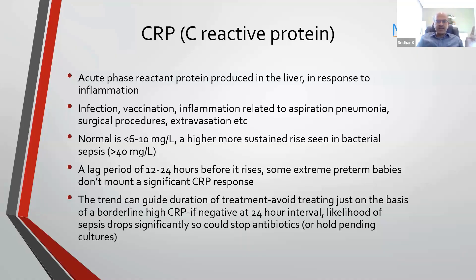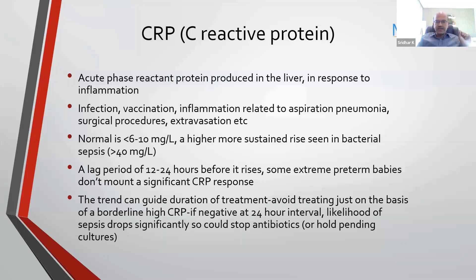A higher, more sustained rise is seen in bacterial sepsis, usually more than 40, and can go into the hundreds. A lag period of 12 to 24 hours is noted before it rises, so the first CRP is not ruling out infection. You have to treat the baby based on clinical concerns. American Academy guidelines don't stress inflammatory markers — your decision to start treatment is based on the clinical picture and risk factors, but you can do a CRP after 24 hours to decide whether the likelihood of sepsis is high.